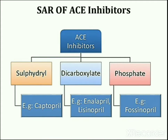ACE Inhibitors can be classified according to the ligand of the zinc ion of ACE into three different structural types. The first type, such as Captopril, has a sulfhydryl moiety as the ligand. The second type, such as Enalapril, uses a carboxyl moiety as the ligand. The third type, such as Fosinopril, uses neither a sulfhydryl nor carboxyl group but a phosphinic acid as the zinc binding moiety.